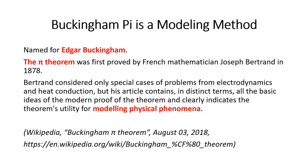A little background: the Buckingham Pi method is a method for modeling physical phenomena. It was first named for Edgar Buckingham — not Buckingham Palace. To give credit, the Pi theorem was first proved by a French mathematician named Joseph Bertrand back in 1878, so he gets the credit, but it was named for Edgar Buckingham. It started off in electrodynamics and heat conduction, but you can use it for any physical phenomena.